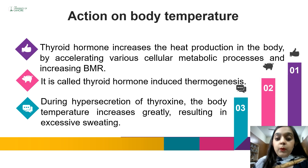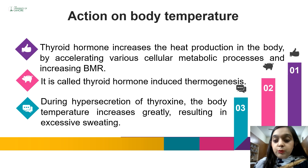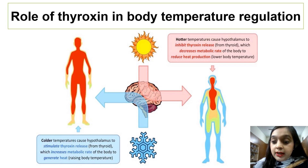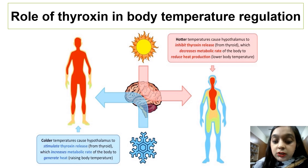Thyroid hormone increases heat production in the body by accelerating various cellular metabolic processes and increasing BMR. This process is known as thyroid hormone-induced thermogenesis. In hyperthyroidism, body temperature increases greatly, leading to excess sweating. In hypothyroidism, individuals feel colder than normal. In hot ambient temperature, decreased thyroid hormone production reduces energy output, helping maintain body temperature. In cold air, the hypothalamus stimulates thyroid hormone release, increasing BMR and heat production to raise body temperature.